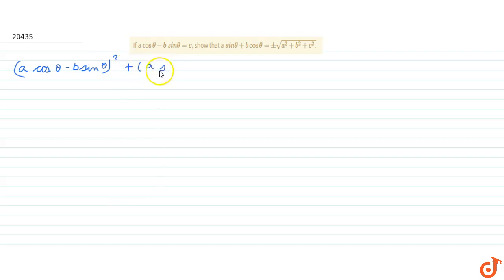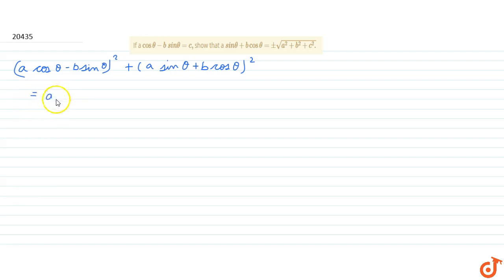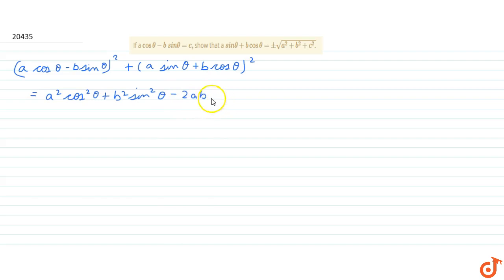...a sin theta plus b cos theta whole square. This will be equal to a square cos square theta plus b square sin square theta minus 2ab sin theta cos theta, and in the second bracket we have a square sin square theta.